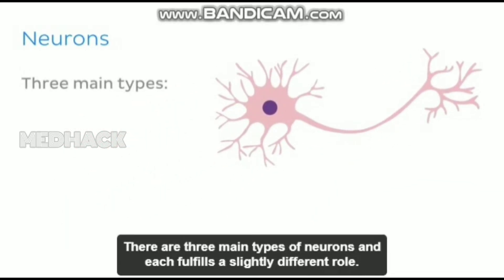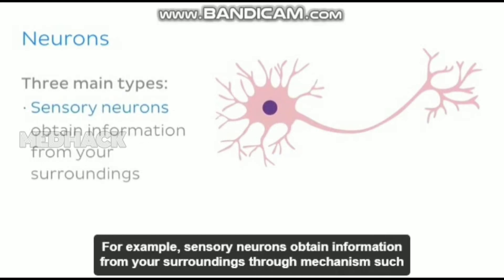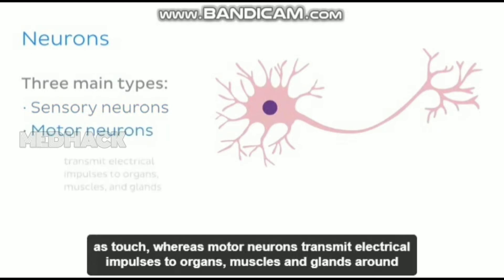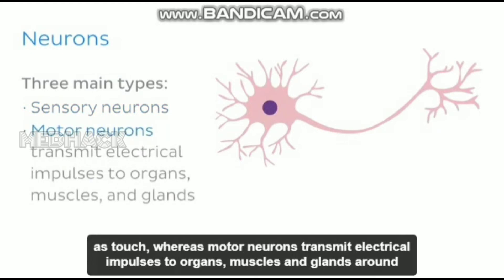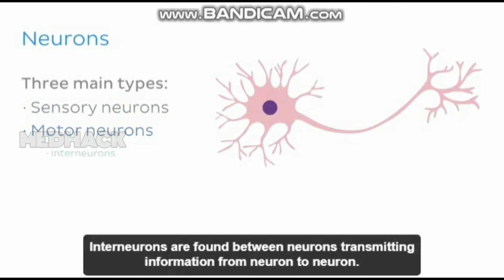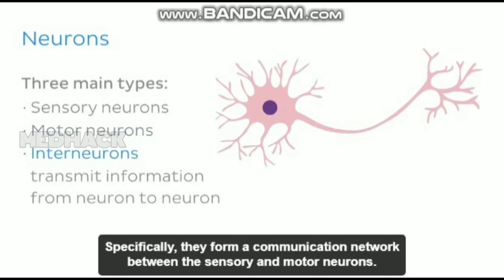There are three main types of neurons, and each fulfills a slightly different role. For example, sensory neurons obtain information from your surroundings through mechanisms such as touch, whereas motor neurons transmit electrical impulses to organs, muscles, and glands around the body to give a signal for action. Interneurons are found between neurons, transmitting information from neuron to neuron. Specifically, they form a communication network between the sensory and motor neurons.